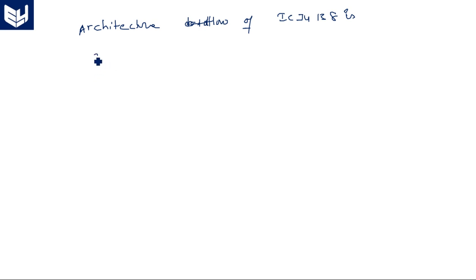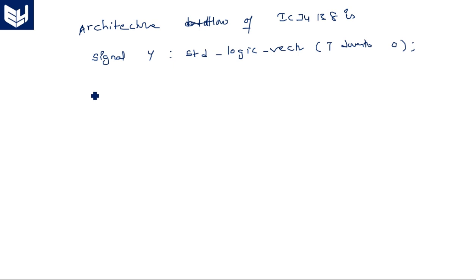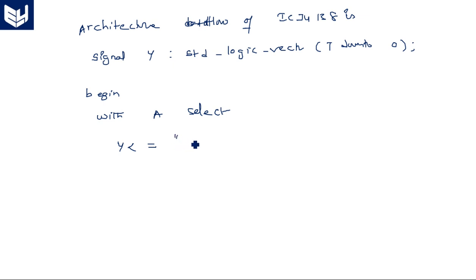Take a signal: signal sum of type STD_LOGIC_VECTOR of 7 downto 0. In the begin section, use a conditional statement — with input A select. Y is first assigned: Y <= "11111110" when A is "000", then "11111101" when "001", and so on for each input combination, where the corresponding active-low output bit goes to 0.